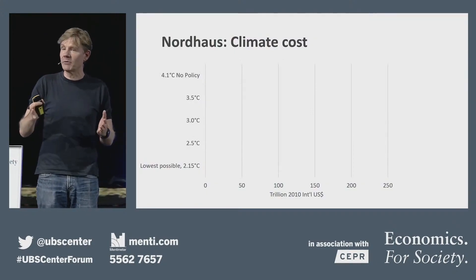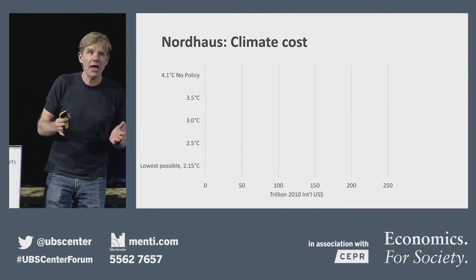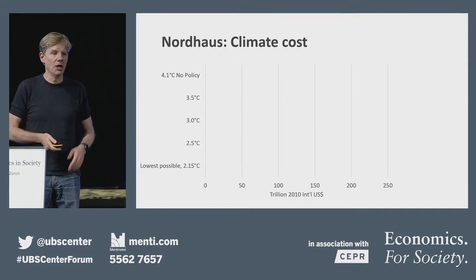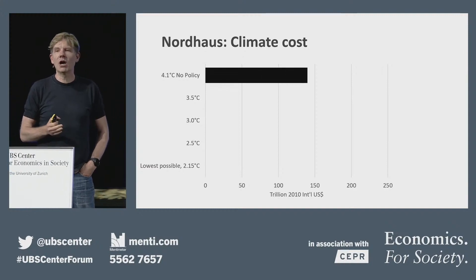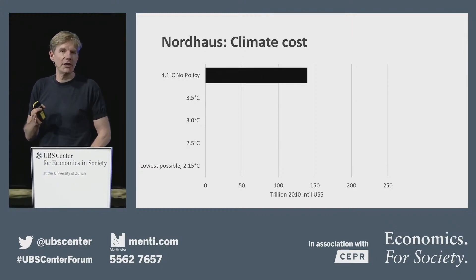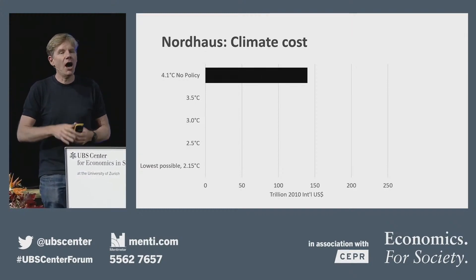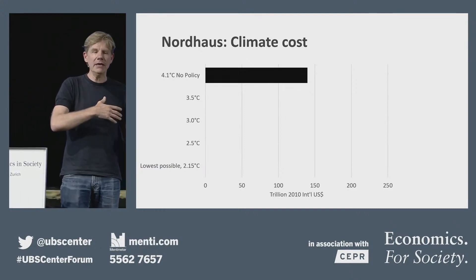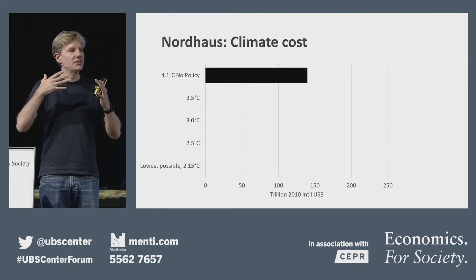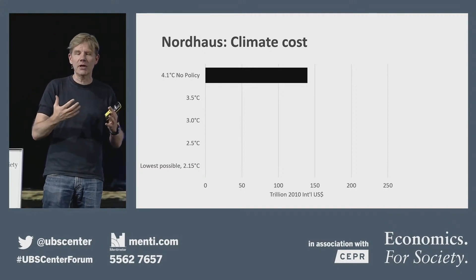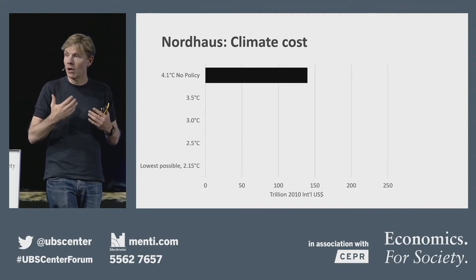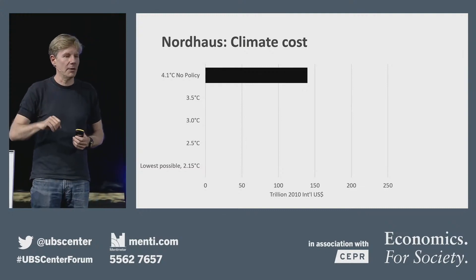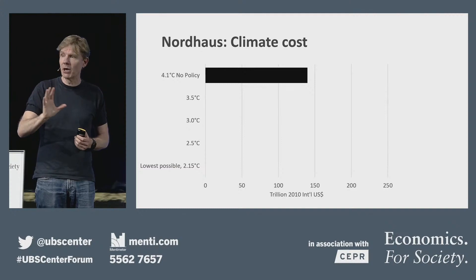Nordhaus basically makes a model and asks: what would happen if we do nothing? How much would that cost us in terms of impact? What he finds is this would cost $140 trillion in today's money. Obviously there's a whole slew of assumptions behind this. But I just want you to see the general point, because I think that's a much more useful conversation if we're going to know how to think about climate. $140 trillion — that's a lot of money.